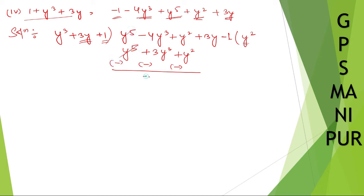Minus 4 minus 3 it will be minus 7y cube. Y square, y square cancel. Take down this one. Plus 3y minus 1.